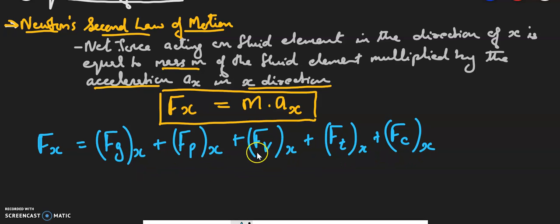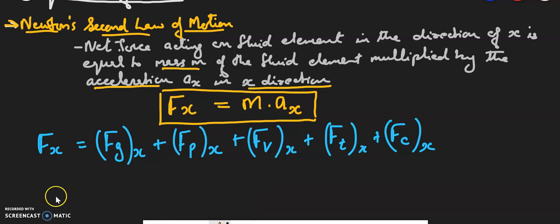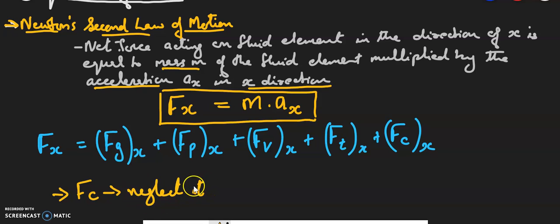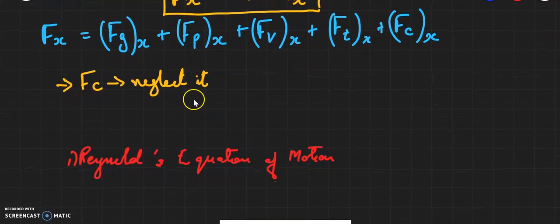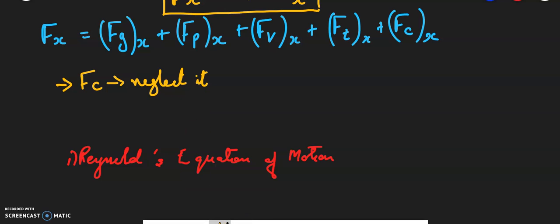Now if we neglect the force due to compressibility — that is, if Fc is negligible — the equation becomes: Fx = Fg + Fp + Fv + Ft. This equation is known as the Reynolds equation of motion.